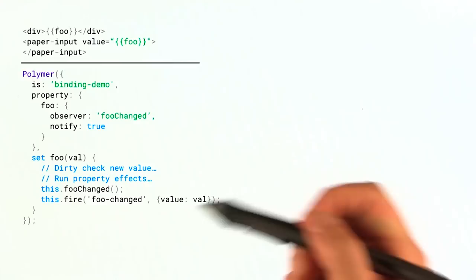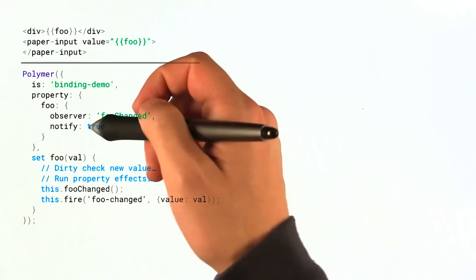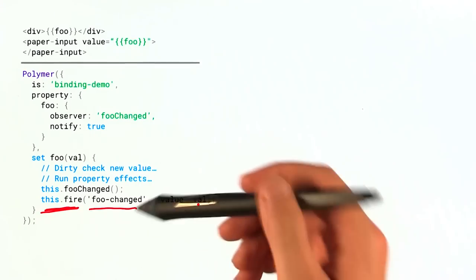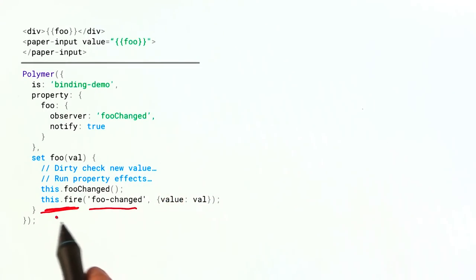If you give it a notify true flag, right? And this enables two-way binding throughout the Polymer system. Well, what this is actually doing is it's just calling this.fire, which dispatches an event. And it's just dispatching an event called foo-changed and passing along the value, the brand new value. So any time you do this on a property, Polymer will always create this sort of event dispatch. And the event is always called something-changed, whatever the property name is, dash changed.